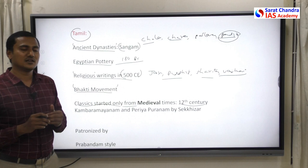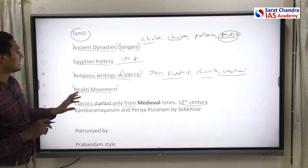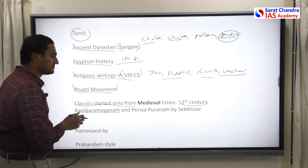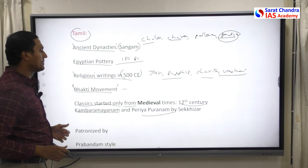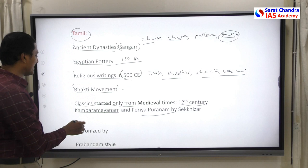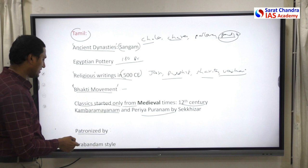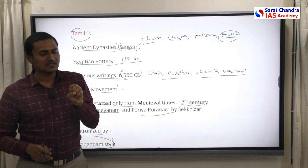Classic Tamil started only from the 12th century. When writing history answers, throw in facts and statistics to prove your point — for example, mention Kambaramayanam and Periya Puranam as classic Tamil works. For the Bhakti movement, mention the Alvars and Nayanars and some of their writings to increase the authority of your answer. Tamil literature was patronized by the Cholas, Cheras, Pandyas, and Pallavas. The Prabandam style — where poets take concepts from Itihasas and Puranas and elaborate on them — evolved during medieval India.